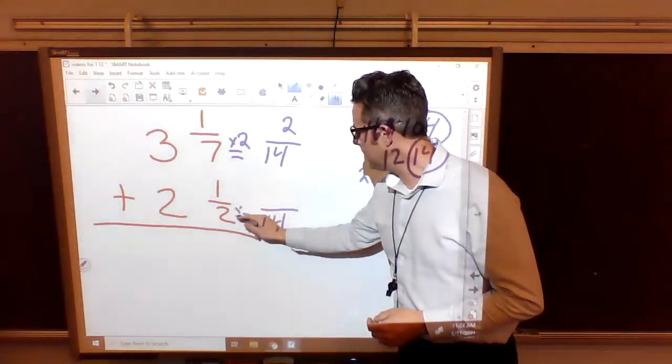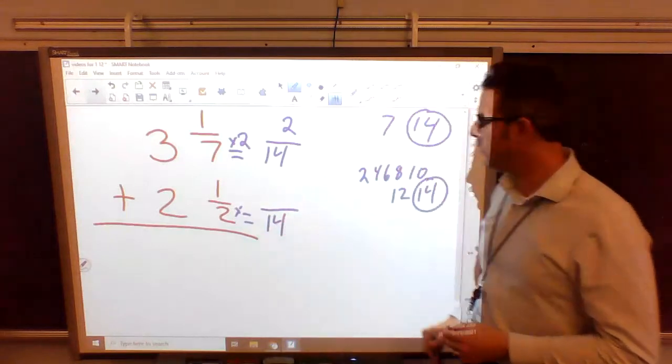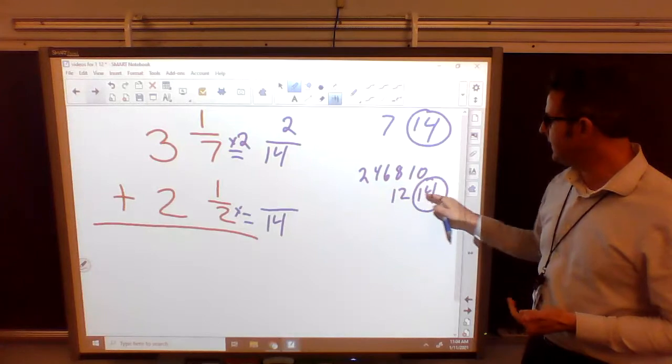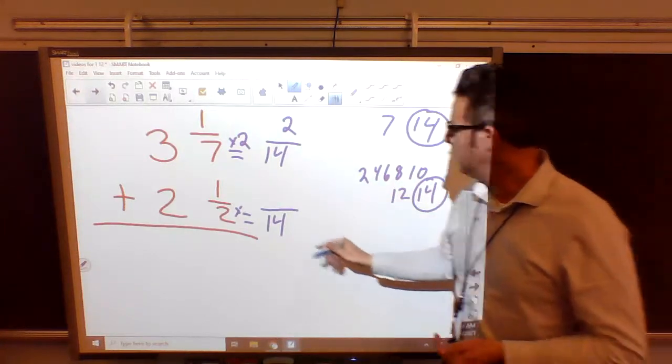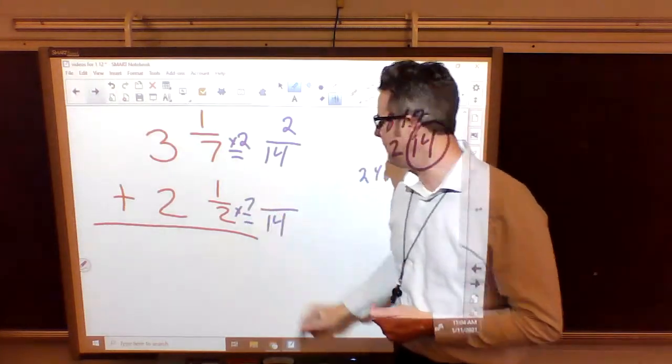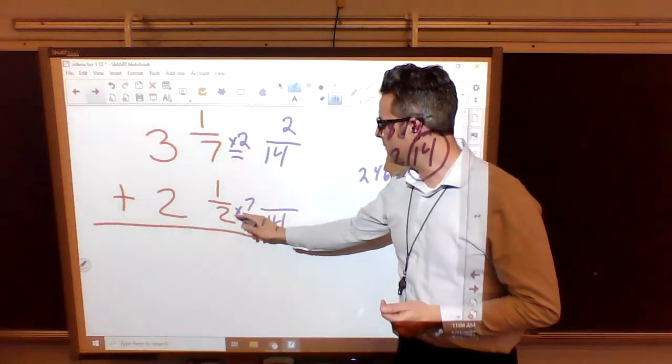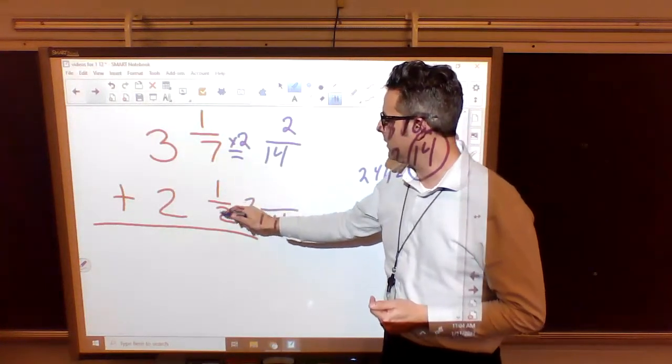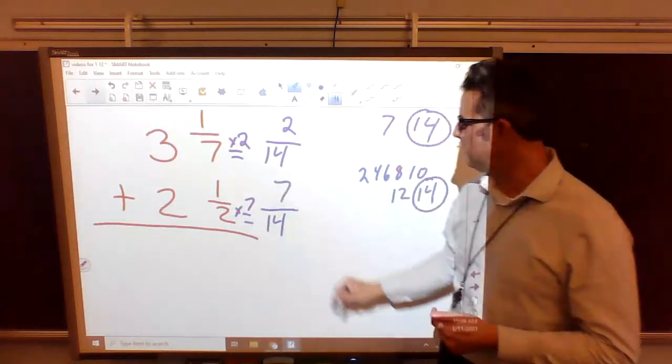All right, we've got to multiply 2. 2 times what is 14? Well, if you don't know, count them. 1, 2, 3, 4, 5, 6. There's 7 numbers up here. So we have to take 2 times 7. Well, if we take the bottom, 2 times 7 is 14. We have to do the same thing to the top, the numerator. 1 times 7 is 7.